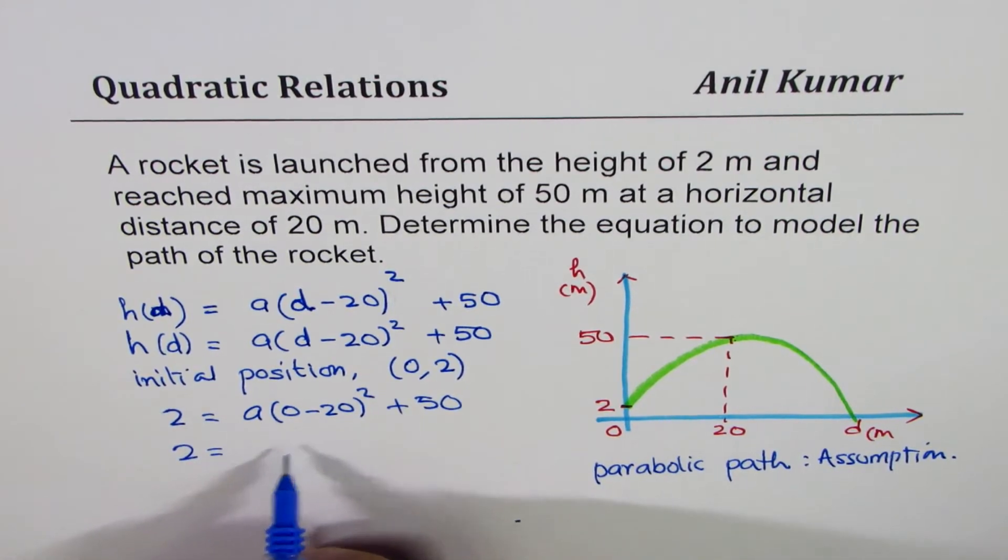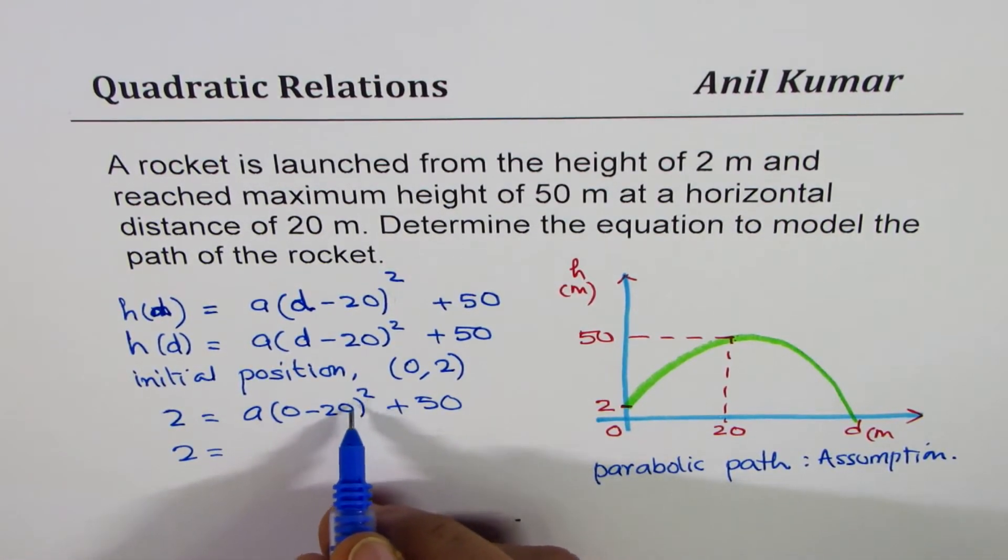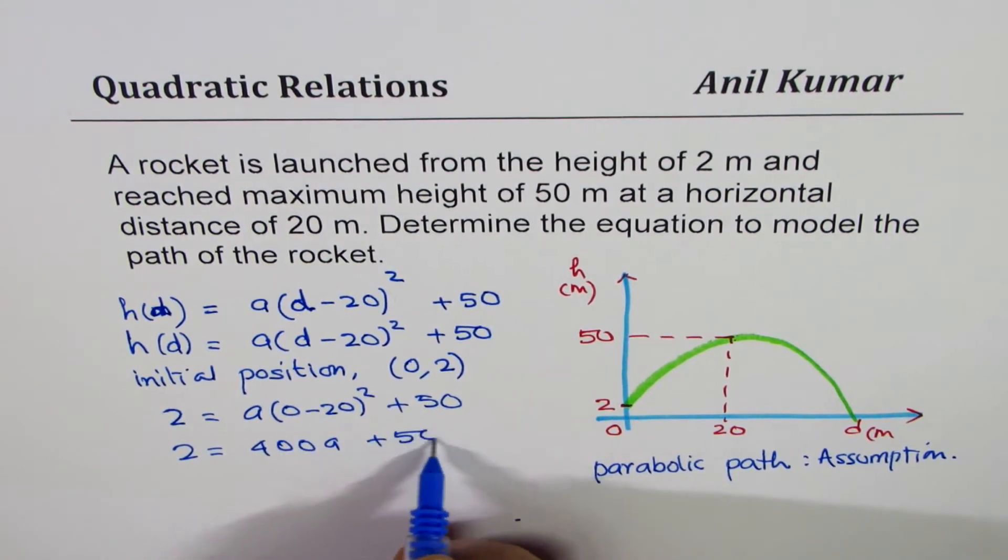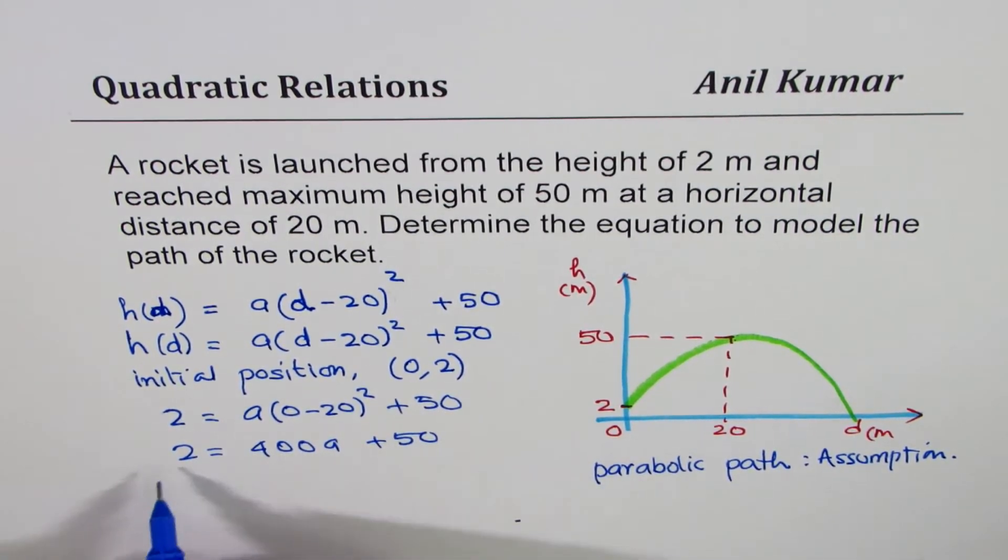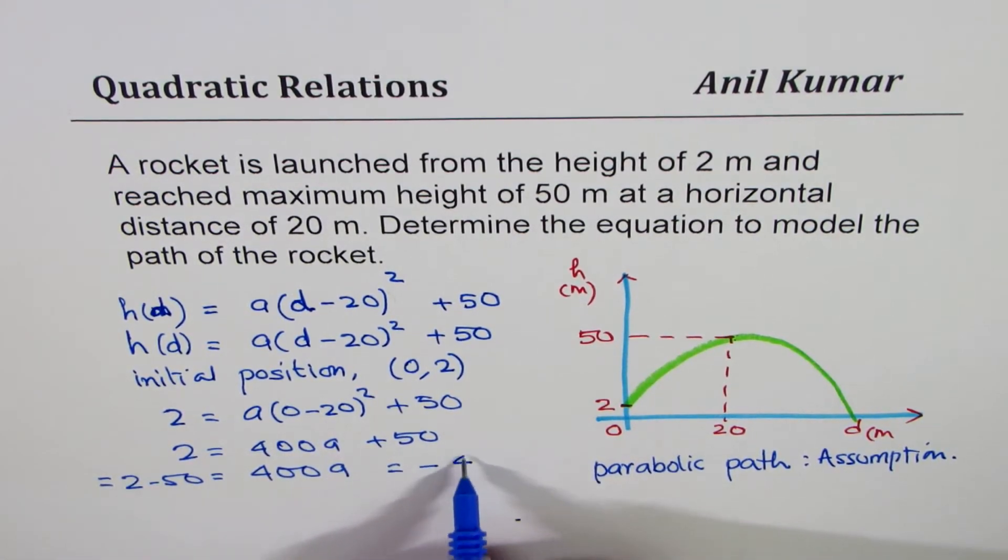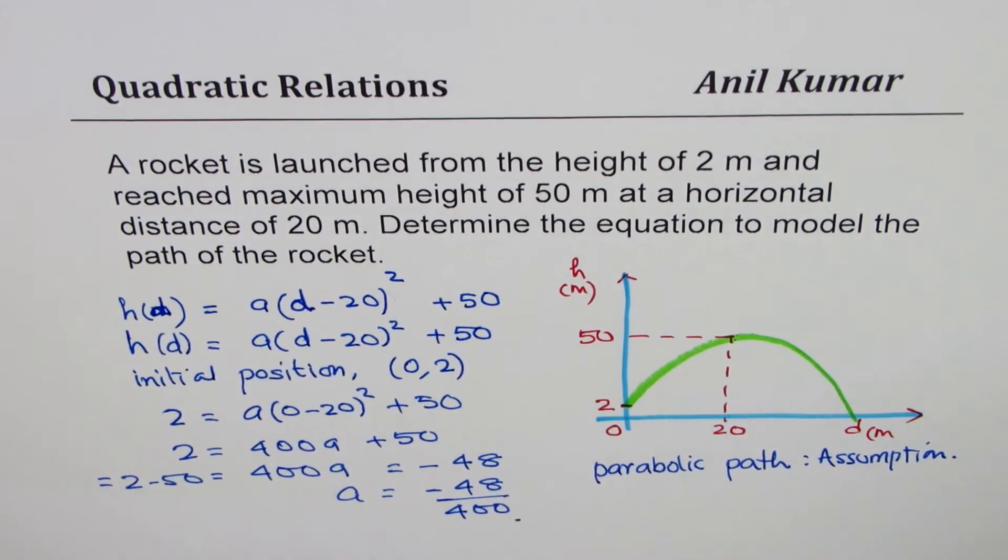That gives you 2 equals to—20 square is positive 400—so we get 400A plus 50. Bringing 50 to the left side gives us 2 minus 50 equals to 400A. And that equals to, we can write here, 2 minus 50 is minus 48. We can say A equals to minus 48 over 400.